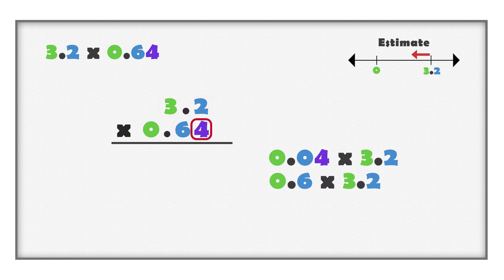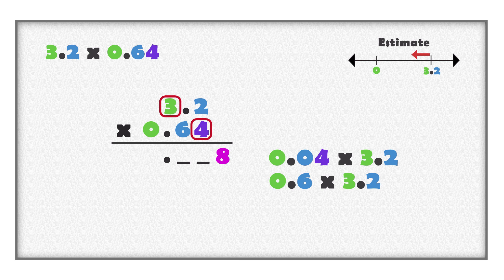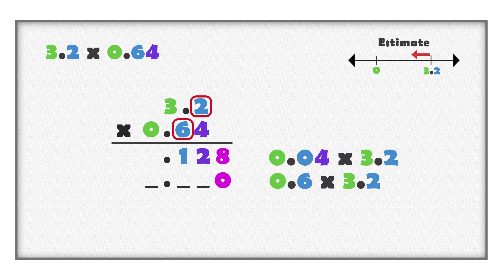When you multiply a hundredth with a tenth, you get thousandths. Four hundredths multiplied with two tenths is eight thousandths. When you multiply hundredths with whole numbers, you get hundredths. Four hundredths multiplied with three is twelve hundredths. When you multiply tenths with tenths, you get hundredths. Six tenths multiplied with two tenths is twelve hundredths. When you multiply tenths with whole numbers, you get tenths. Six tenths multiplied with three is eighteen tenths.